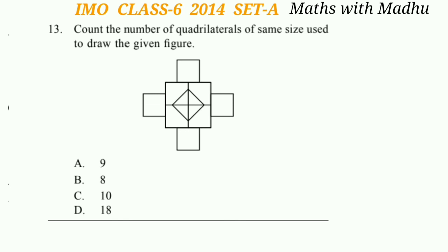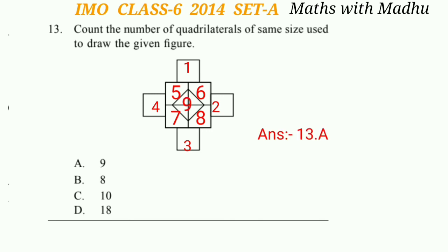Question 13: Count the number of quadrilaterals of the same size used to draw the given figure. Quadrilaterals are figures with four sides. The number of quadrilaterals of the same size used to draw the figure is option A, which is 9.